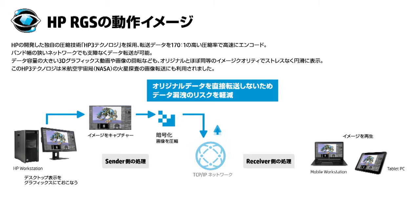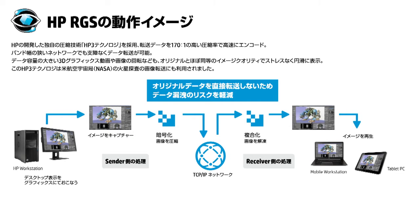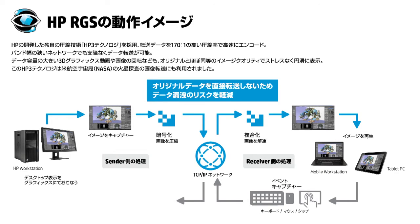レシーバーがRGSを起動するとセンダーの画面がレシーバーの画面に転送されて表示されます。レシーバーのユーザーがキーボード、マウス、タッチ操作を行うとその情報がネットワークを介してセンダーに送信され、センダーのアプリケーションで処理されその処理が反映された画面がレシーバーに返送されます。